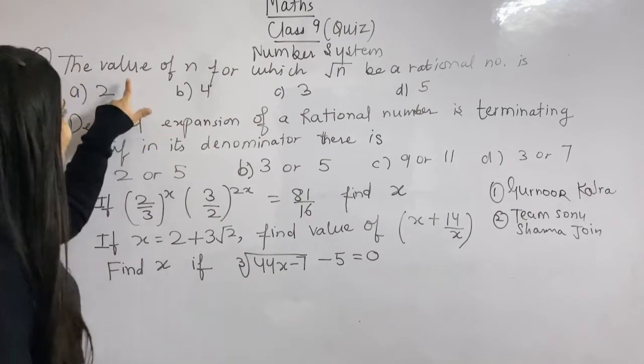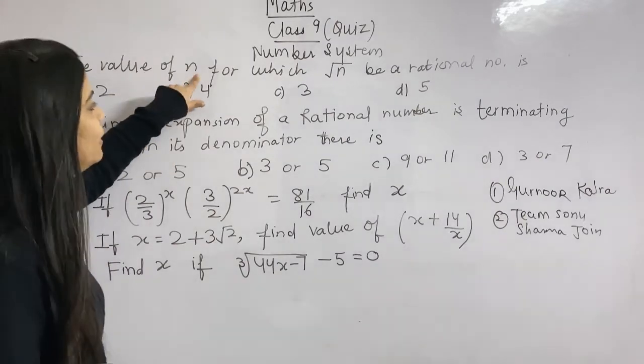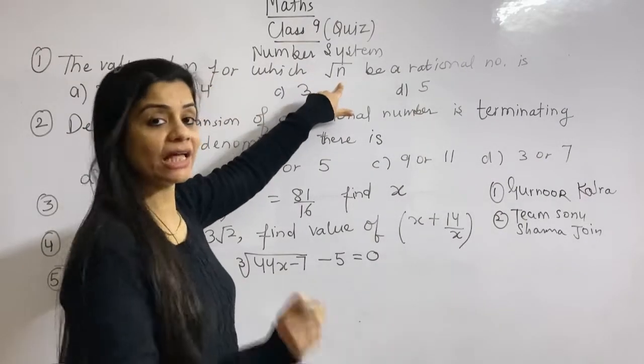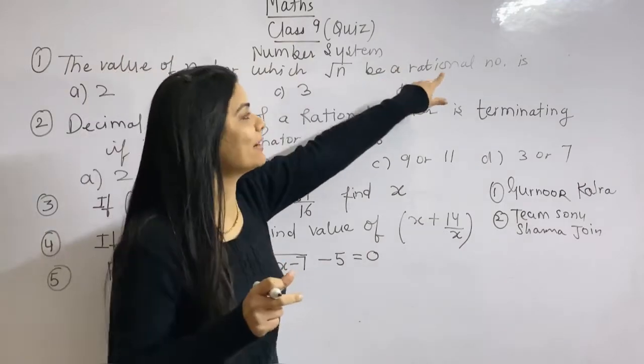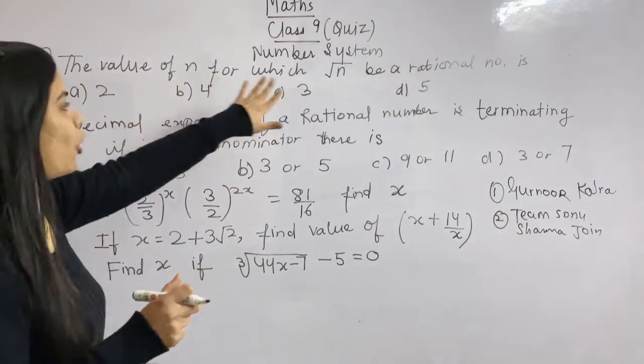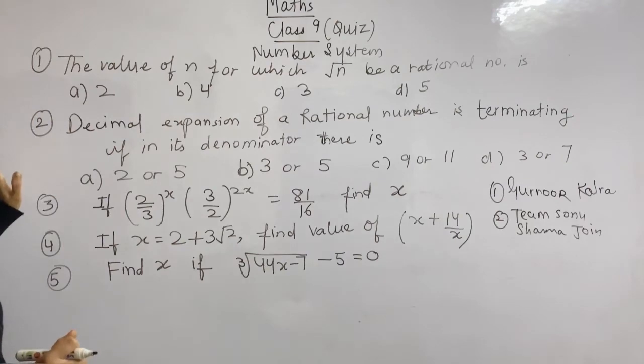So these are your questions. First question: the value of n for which root of n is a rational number. Four options are there. You'll understand this one too.